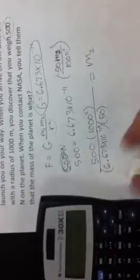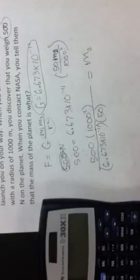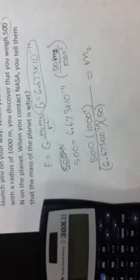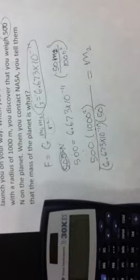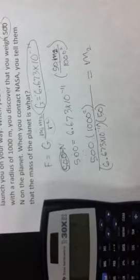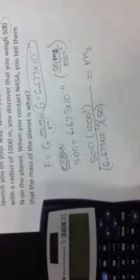So let's do that on our calculator. We should be able to do it all in one step: 500 times 1,000 squared divided by 6.673 times 10 to the negative 11th times 50, close parentheses.